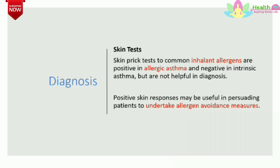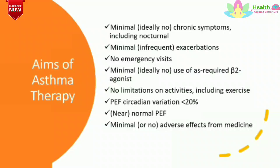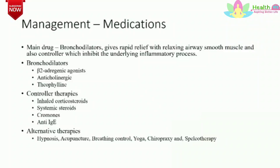Management of asthma. The aims of asthma therapy are minimal chronic symptoms including nocturnal symptoms, minimal exacerbations, no emergency visits, minimal use of as-required beta-2 agonists, no limitations on activities including exercise, peak expiratory flow rate circadian variation less than 20%, near normal peak expiratory flow rate, and minimal adverse effects from medication. Medications used include bronchodilators — beta-2 adrenergic agonists, anticholinergics, and theophylline — and controller therapies: inhaled corticosteroids, systemic steroids, cromolyns, and anti-IgE therapy. Some alternative therapies include hypnosis, acupuncture, breathing control, yoga, chiropractic, and speleotherapy.